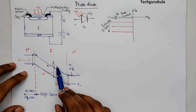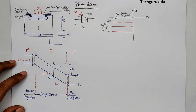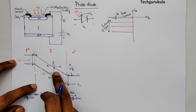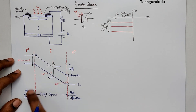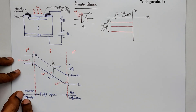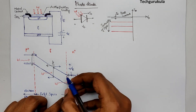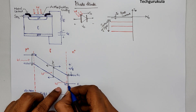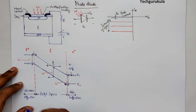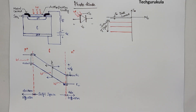When electron-hole pairs are generated in the intrinsic region due to incident light, holes are sent toward the P side and electrons toward the N side — both transported by the electric field present. On the P side, electrons diffuse into the intrinsic region (diffusion region), whereas in the intrinsic region the carriers move by drift due to the electric field (drift space). On the N side, holes generated by incident light diffuse into the intrinsic region where the electric field sends them to the P side, while electrons are pushed away. This is the hole diffusion region.